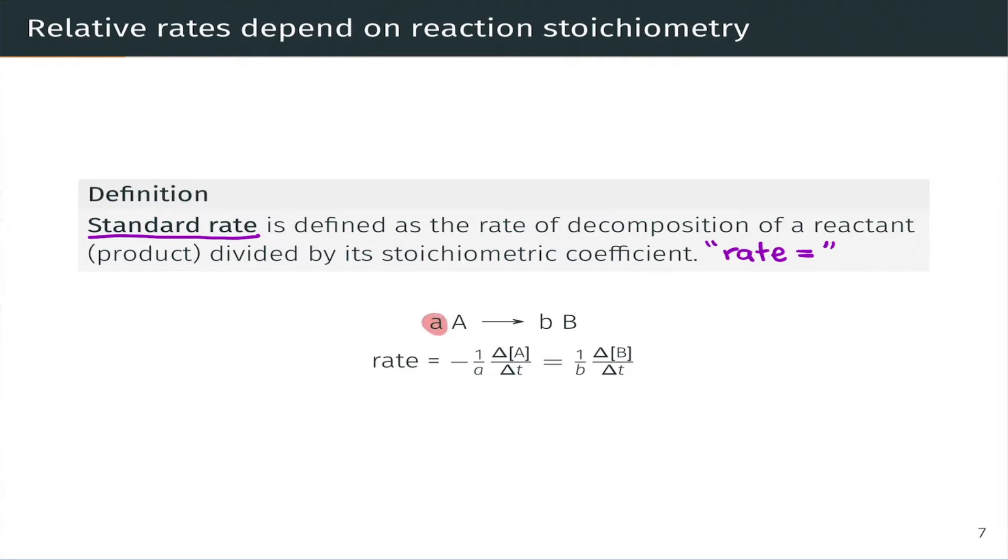So let's imagine a hypothetical reaction: little a molecules of A going to little b molecules of B. We saw in the last video that the rate of consumption of A divided by its stoichiometric coefficient with a negative sign out front to ensure that this value is positive is equal to 1 over the stoichiometric coefficient of B times its rate of production.